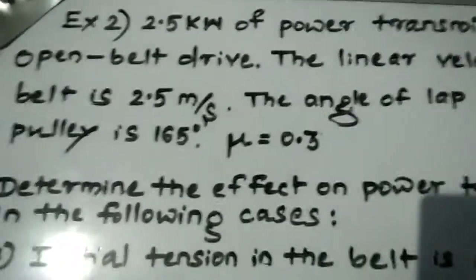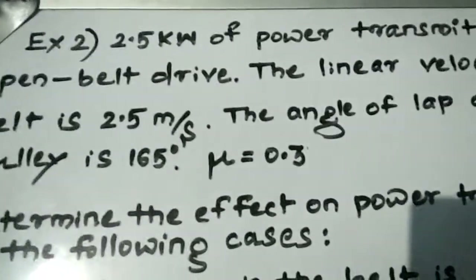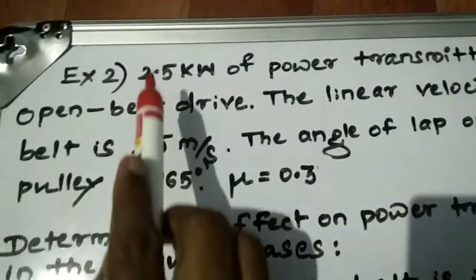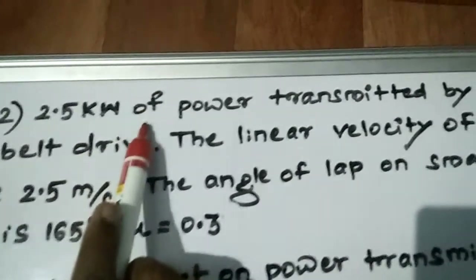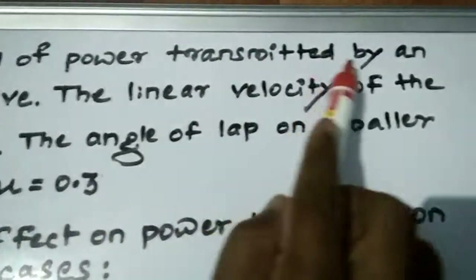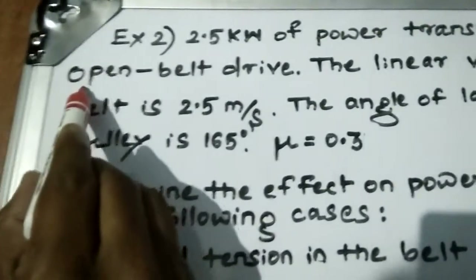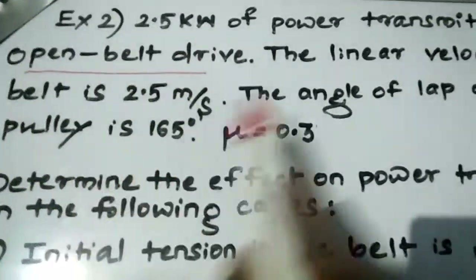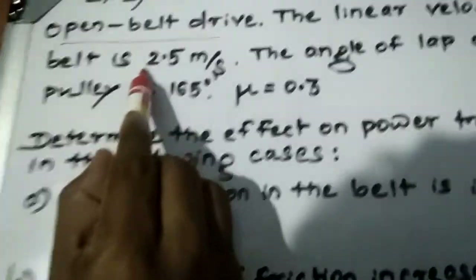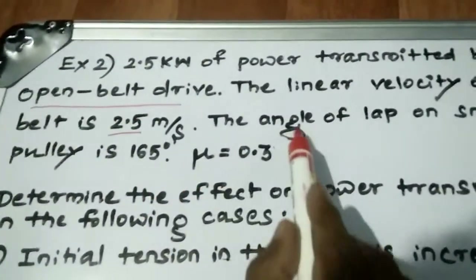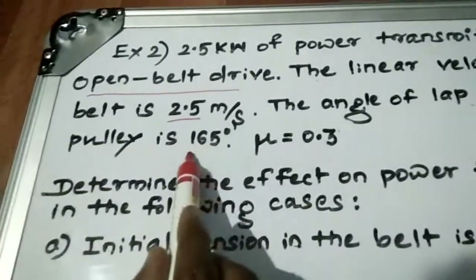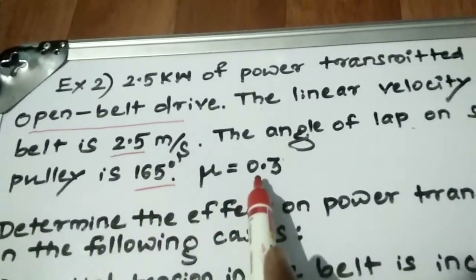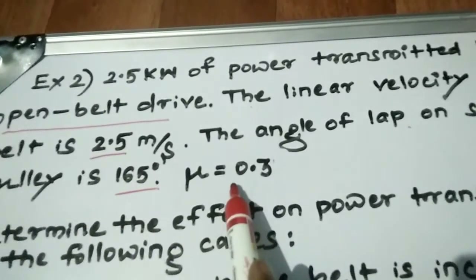Let me explain the problem. The power transmitted by an open belt drive is given as 2.5 kilowatt. The linear velocity of the belt is given as 2.5 meter per second. The angle of lap on the smaller pulley is given as 165 degrees.